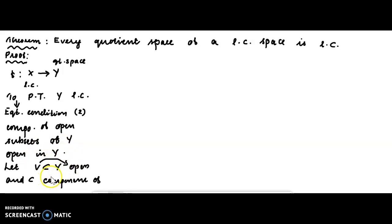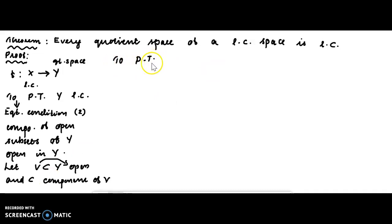We take Y as an open set and C as a component of V. To prove local connectedness, we need to show that if the components of open subsets of Y are open, then C is open in Y.